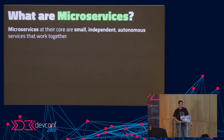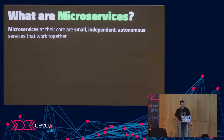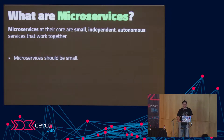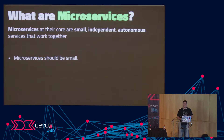First off, the definition — what are microservices? Microservices at their core are small, independent, autonomous services that work together. It is very important when defining microservices that they should be small and accomplish a specific functionality, otherwise you run the risk of writing a microservice, adding more and more to it, and eventually ending up with a monolith once again.